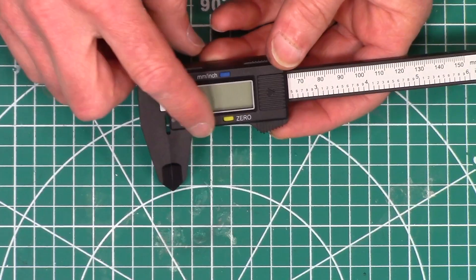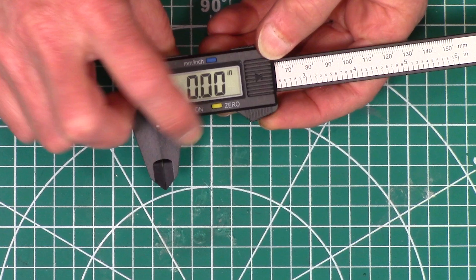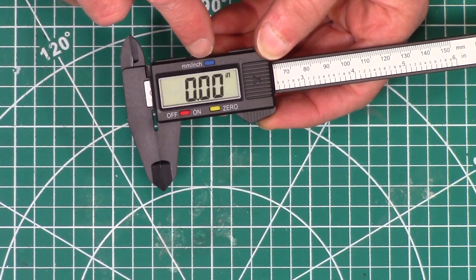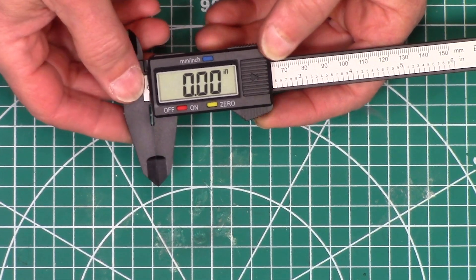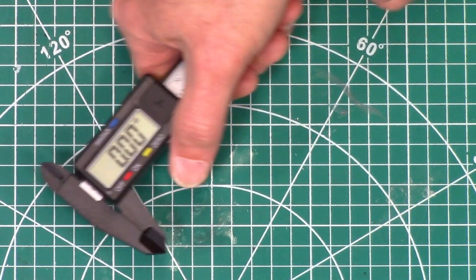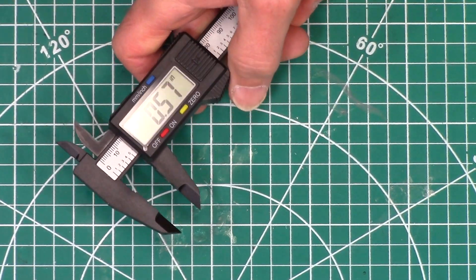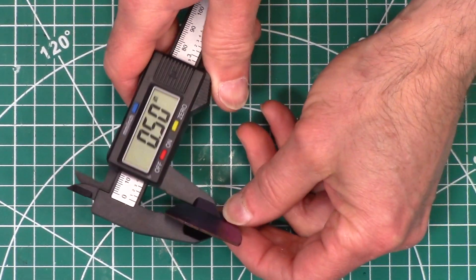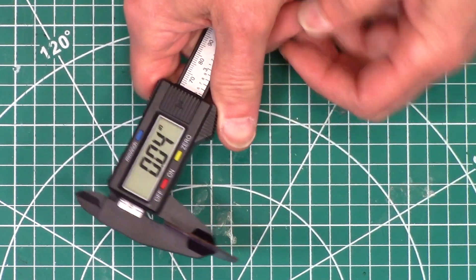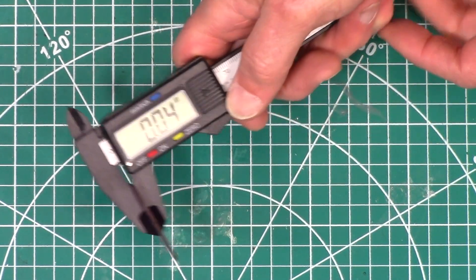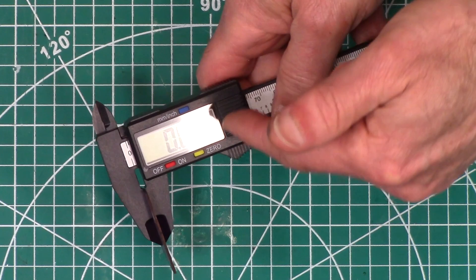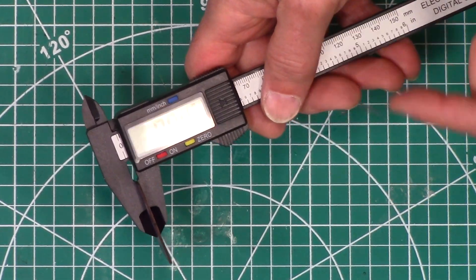To turn it on and off, just push the button right here. You can switch between English or metric, and then put your thumb there to slide it open to make your measurement. You don't want to push too hard. Just close it, and that will find the thickness of the material.